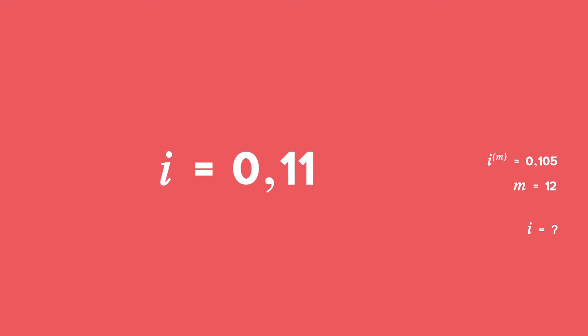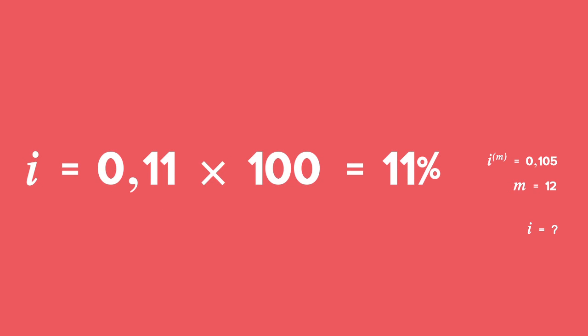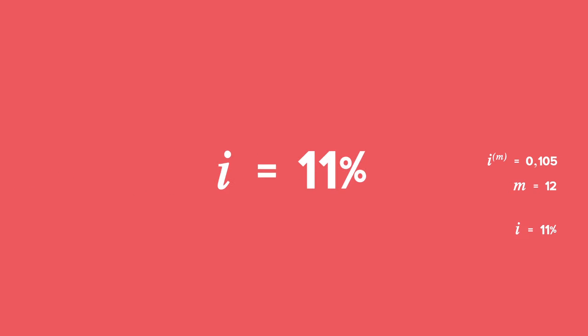You will get i = 0.11, correct to two decimal places. To get your answer in percentage form, multiply by 100, and the effective annual interest rate equals 11%.